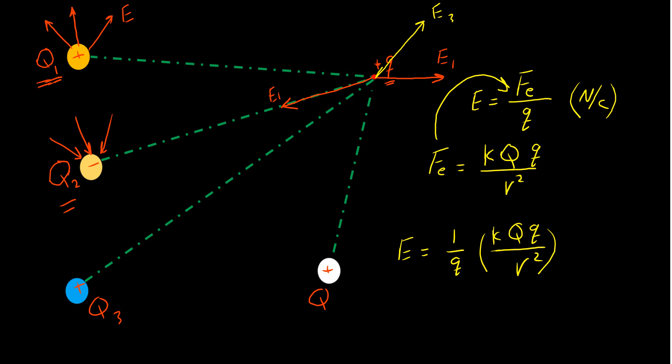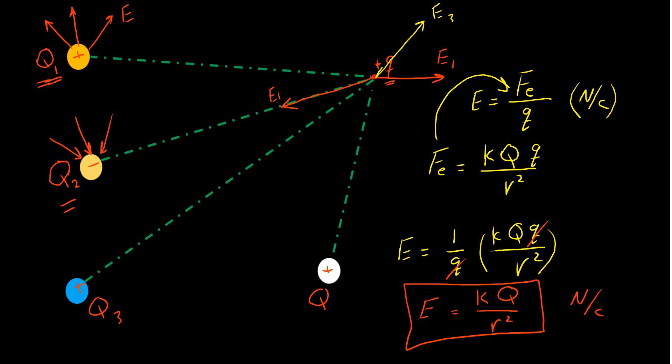We can cancel the test charge q from numerator and denominator, so the electric field simplifies to E equals k·Q divided by r squared, where Q is the charge generating the electric field and r is the distance to the point of interest. The unit remains newtons per coulomb. Those are the two formulas that can be used to calculate the electric field at a certain point.